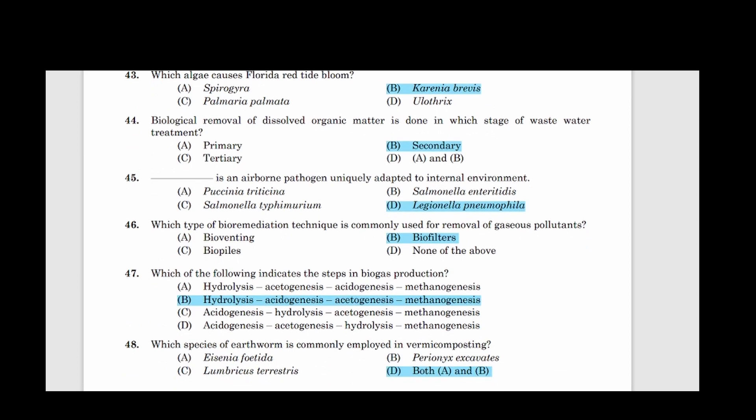Forty-five: Dash is an airborne pathogen uniquely adapted to internal environment? Answer option D, Legionella pneumophila. Forty-six: Which type of bioremediation technique is commonly used for removal of gaseous pollutants? Answer option B, Biofilters. Forty-seven: Which of the following indicates the steps in biogas production? Answer option B, Hydrolysis, acidogenesis, acetogenesis, methanogenesis.